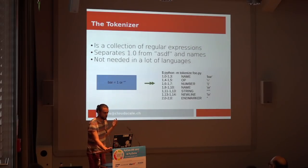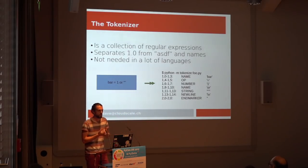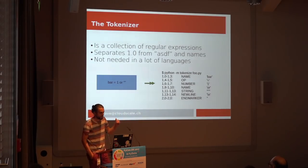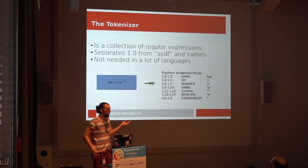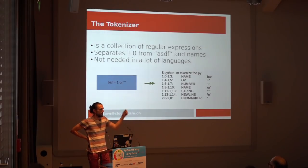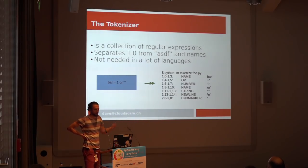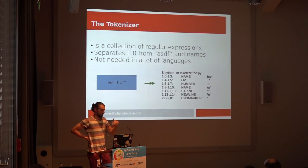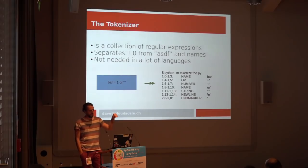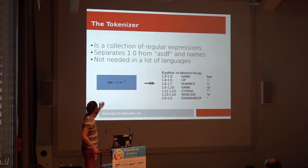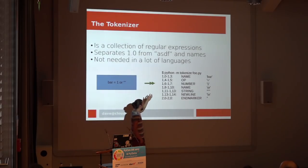Let's start with the tokenizer. The tokenizer is something really simple. In general, tokenizers work from top to bottom, from left to right. It's nothing else than taking the input stream — one text — and basically taking the first token that comes along. Like here, you have bar equals one or an empty string, and then it gives you these nice tokens. It says bar is a name, then there's an operator equals, then there's a number, then there's 'or', which is a name again.